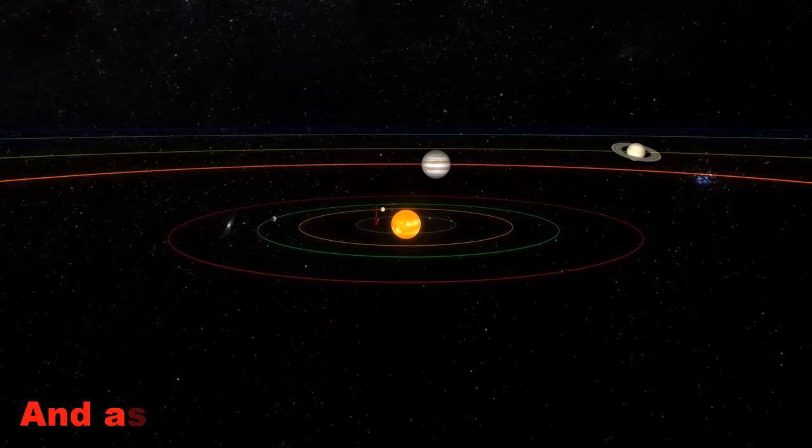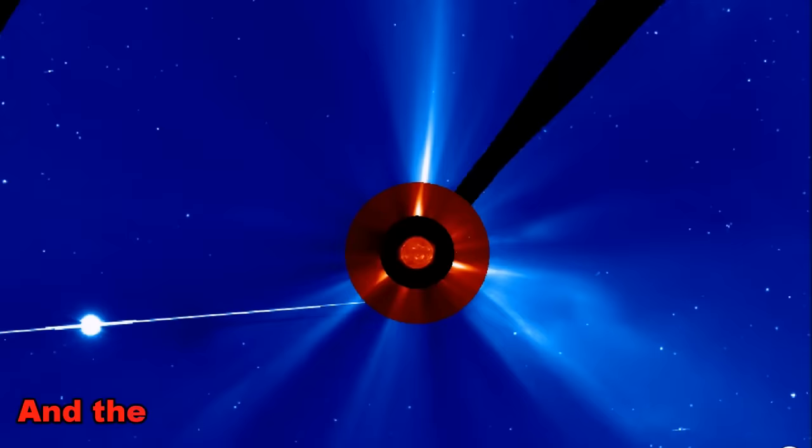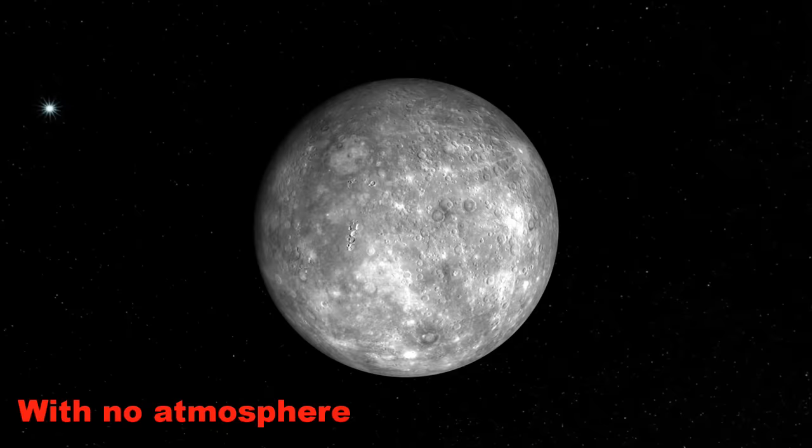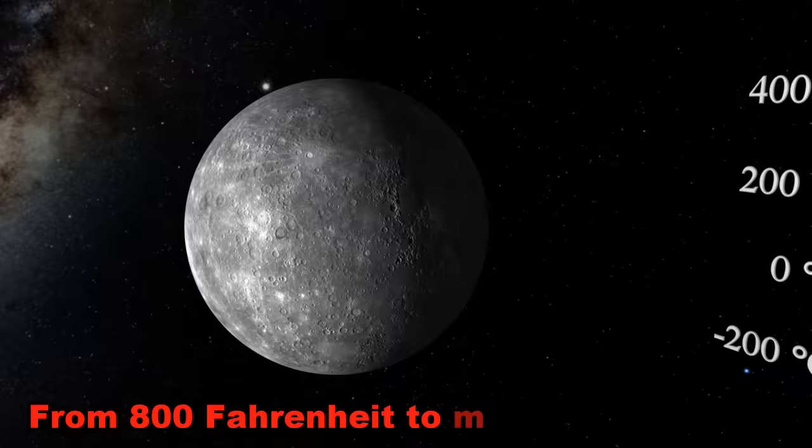Mercury is the closest planet to the Sun, and as such, it takes the least time to orbit. Its year is only 88 Earth days, and the solar wind means little gas stays. On its rocky surface, barren and full of craters, with no atmosphere, its temperature wavers from 800 Fahrenheit to minus 300 at night. But there is still some ice in craters away from the light.